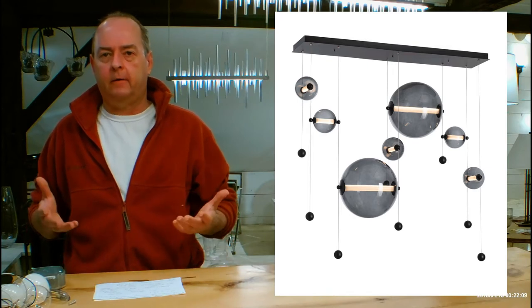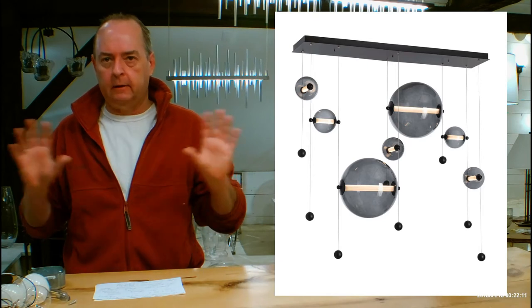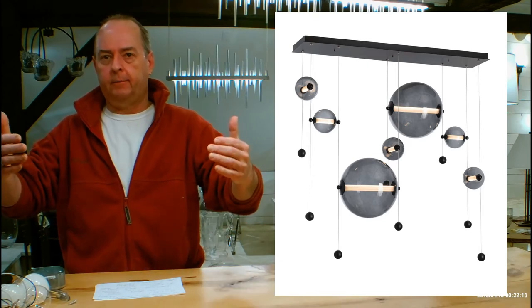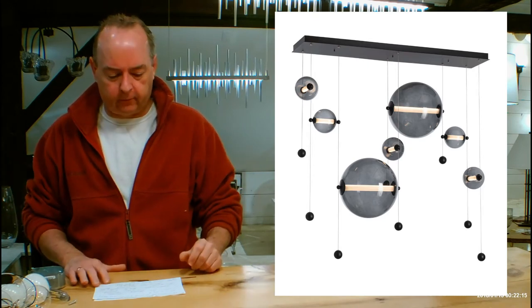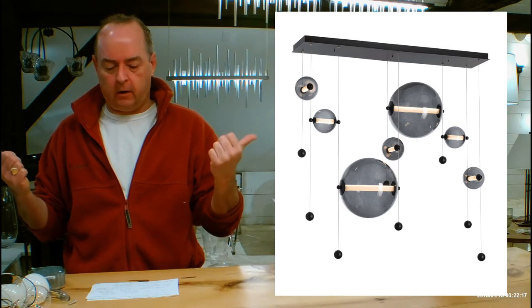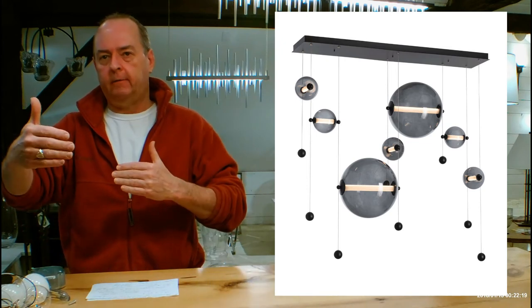So let's talk about the size of the fixture itself. This is going to be a linear fixture with a bit of a depth to it compared to the other Abacus fixtures. This is 49 inches long and it's 20.5 inches in depth.